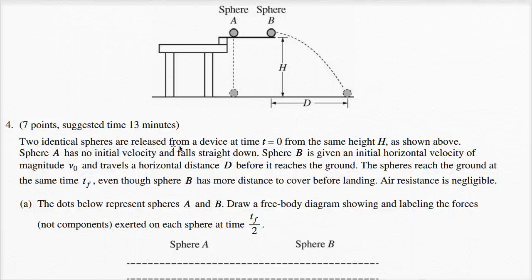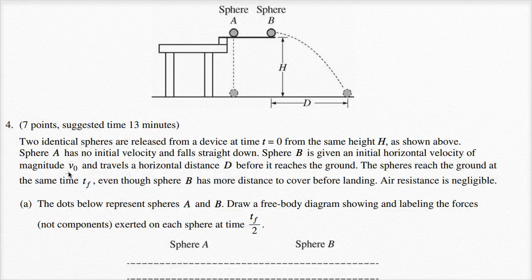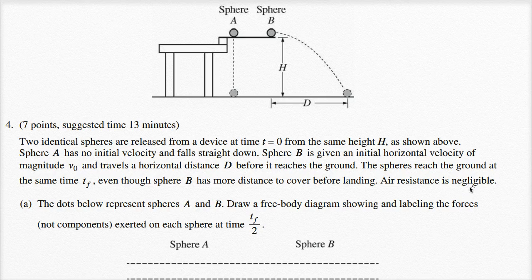Two identical spheres are released from a device at t equals zero from the same height h. Sphere A has no initial velocity and falls straight down. Sphere B is given an initial horizontal velocity of magnitude v sub zero and travels a horizontal distance d before it reaches the ground. The spheres reach the ground at the same time t sub f, even though Sphere B has more distance to cover before landing. Air resistance is negligible.